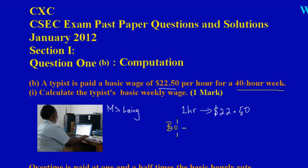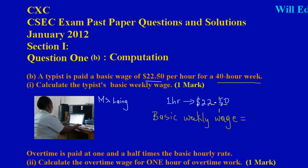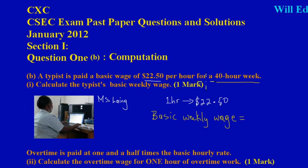To calculate her basic weekly wage, we can say her basic weekly wage must be equal to - since one hour has $22.50, then if I need 40 sets of (because the word 'of' means to multiply) $22.50, so her basic weekly wage would be $900. Miss Lang, or the typist rather, works a basic weekly wage of $900. Here in Jamaica that's not a lot of money.